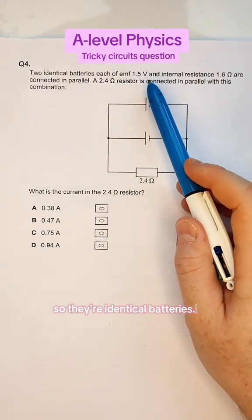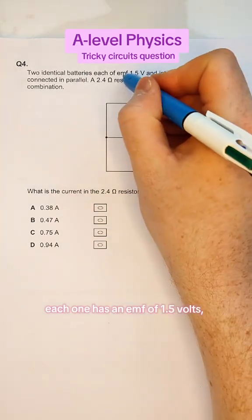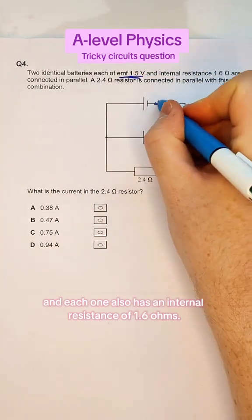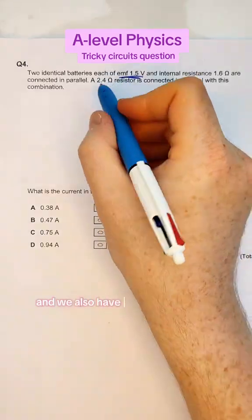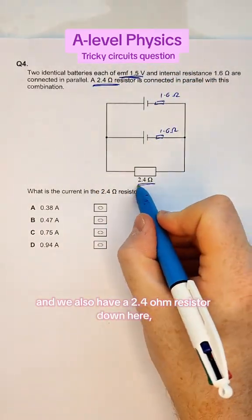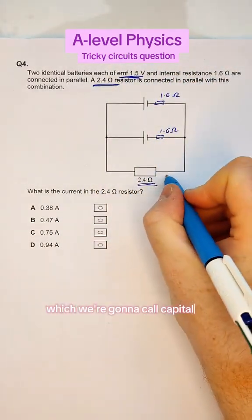They're identical batteries, each one has an EMF of 1.5 volts, and each one also has an internal resistance of 1.6 ohms. We are after the current, and we also have a 2.4 ohm resistor down here, which we're going to call capital R.